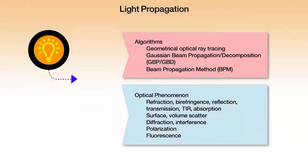To propagate we have various algorithms. We're going to spend 95 percent of our effort on geometrical optical ray tracing, because that solves the vast majority of problems that people need to do and it is great for illumination problems, first order optics, and a number of things. Gaussian beam propagation and decomposition is actually an approach for doing wave optics or for getting coherent and diffractive results using the same ray trace engine but with it carrying more information with each ray.